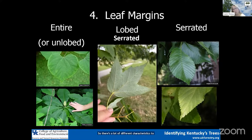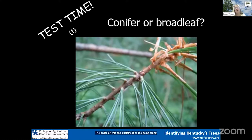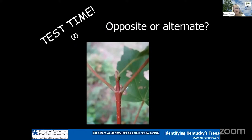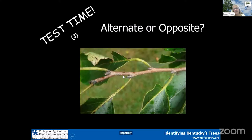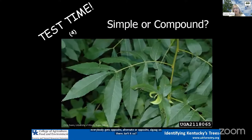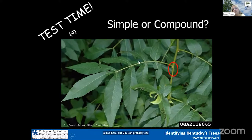Now I'm going to introduce you to a tool that walks you through identification in order — the dichotomous key. But before we do that, let's do a quick review. Conifer or broadleaf? Hopefully everybody says this is a conifer. Opposite or alternate? Hopefully everybody gets opposite. Alternate or opposite? It's zigzagged on there, so it's alternate. Simple or compound? You can see those sulfur-yellow buds all the way down here — so this is a compound leaf — it's a bitternut hickory.